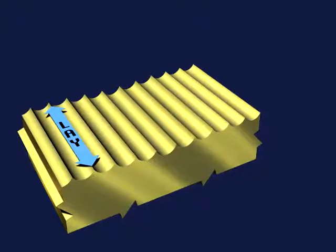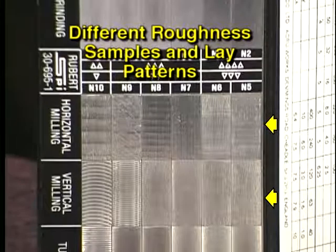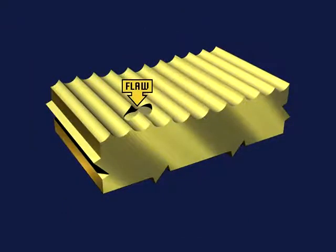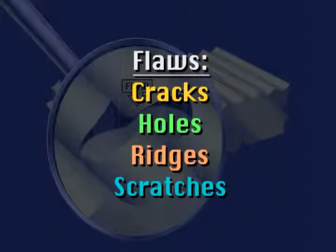Lay is the direction of the surface pattern, determined by the method of production. In this example, you can see that the direction of lay is perpendicular to the patterns of roughness and waviness. Roughness, waviness, and lay are all characteristics of surface finish that are relatively consistent and have a pattern. These characteristics can be followed and predicted on the surface of a workpiece. A flaw is an irregularity that occurs on the surface finish at random without any kind of pattern or predictability. Some examples of flaws are cracks, holes, ridges, and scratches.